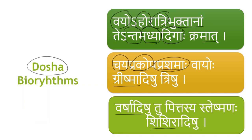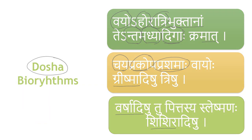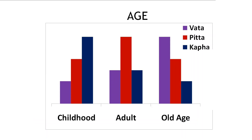This is very interesting information from Ayurveda. This is how the doshas vary as per age. Vata has been shown in purple colour, Pitta in red colour, and Kapha in dark blue colour. In childhood, Kapha is most dominant, Pitta is medium, and Vata is minimum, whereas this situation is reversed in old age. In old age, Vata is dominant, Pitta is medium, and Kapha is minimum. In the middle age, Pitta is most dominant, and Vata and Kapha are at medium levels.